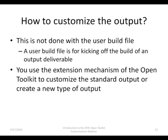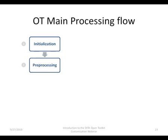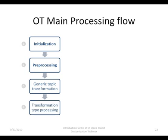Before delving into the extension mechanism, we need a deeper understanding of how the Open Toolkit works. A build in the Open Toolkit consists of four stages. The first stage is the build initialization. Next, there is the pre-processing step. Then, a generic topic transformation takes place. The last stage is a transformation to the requested output type, sometimes involving a rendering engine.